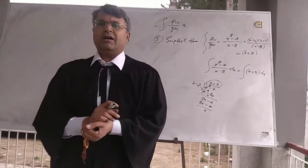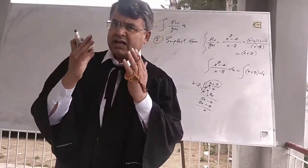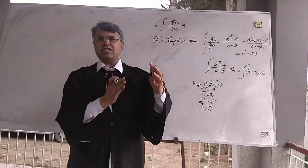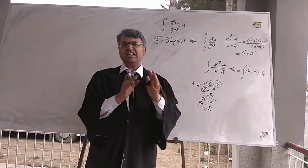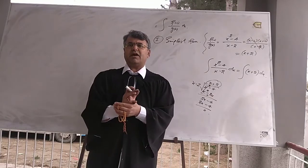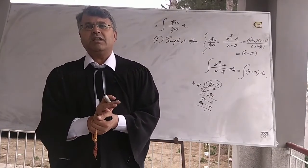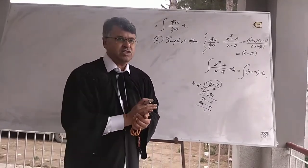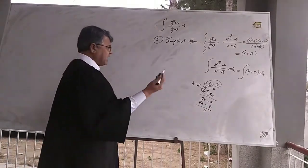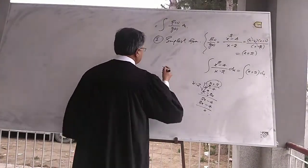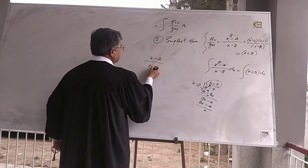When the numerator is a polynomial of degree 2 and the denominator is a polynomial of degree 1, the polynomial of degree 2 can be divided by the polynomial of degree 1. Alternatively, we can rearrange the function.